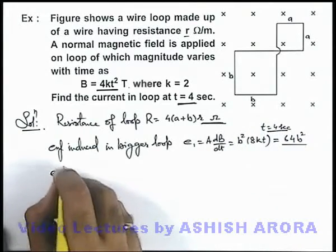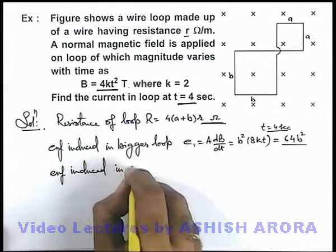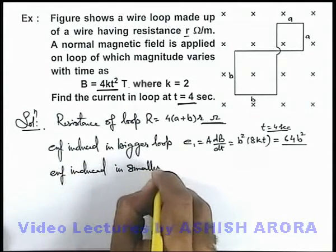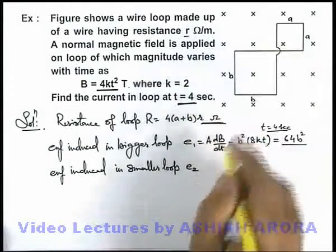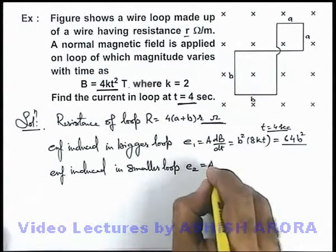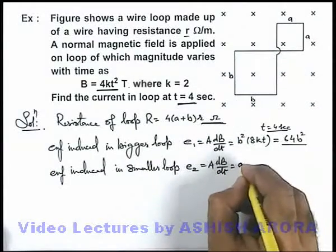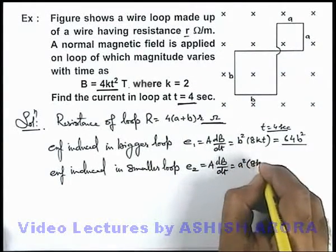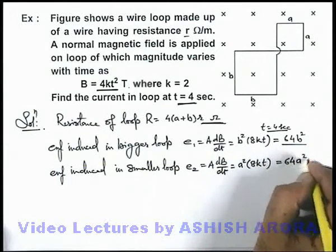Similarly, if we calculate EMF induced in the smaller loop, we can again use the formula A × dB/dt. Here the area of this smaller loop is a², dB/dt is again 8kt. On substituting the values, this is 64a².